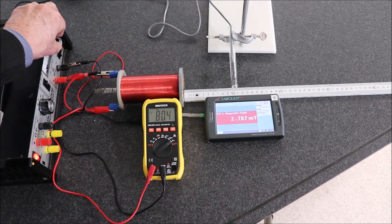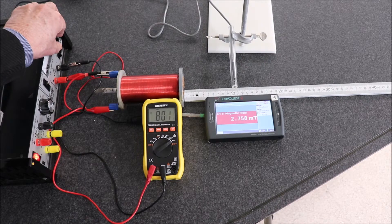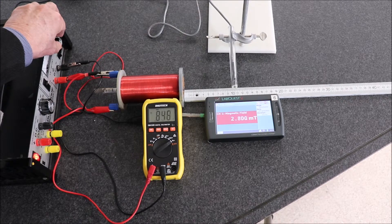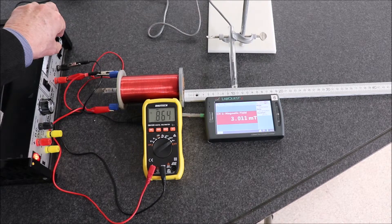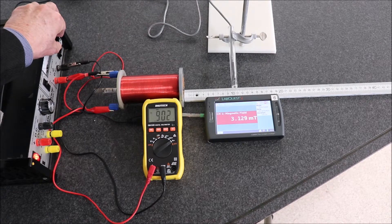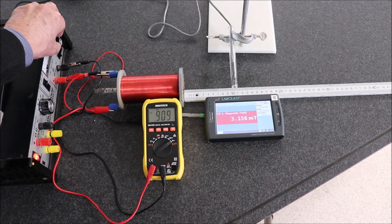So in other words when we plot magnetic field strength versus current we should get a straight line, and the straight line is an indication of a couple of things, mainly the number of turns per meter on the solenoid.